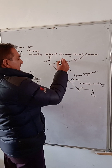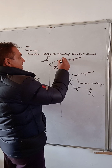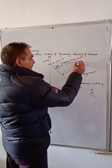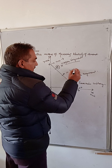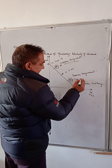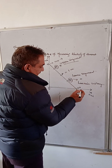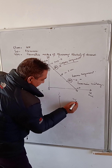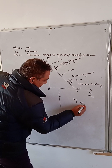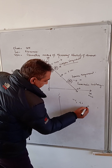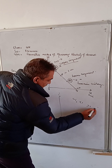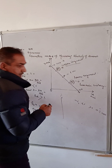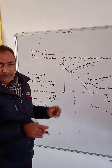Therefore, we have five cases: infinity, greater than 1, equal to 1, less than 1, and 0. These are the five values of elasticity of demand measured using the point method.